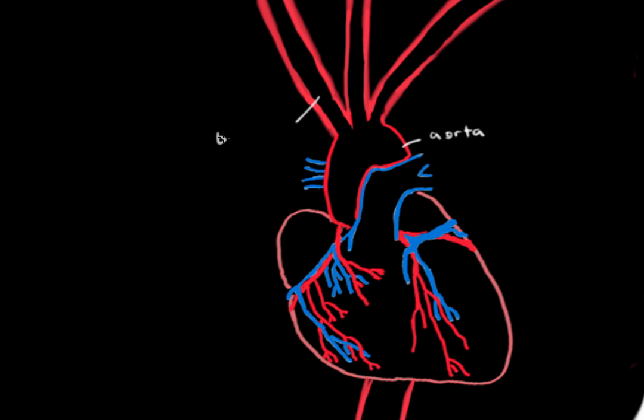Off of the aorta branch three huge main vessels. First, you've got your brachiocephalic, which actually branches a little further down to become the right common carotid and the right subclavian. The next vessel that comes off is the left common carotid, and lastly, this other vessel right here is called the left subclavian.